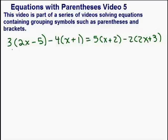On the left-hand side, we've got to distribute the 3 to both of those numbers. So we have 3 times 2x is 6x minus 3 times 5 which is 15.